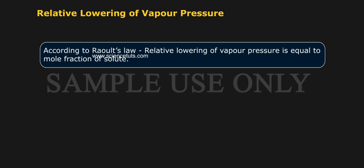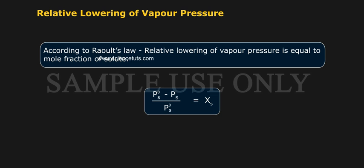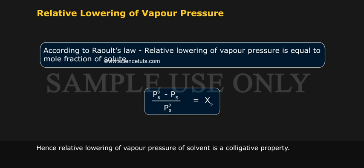According to Raoult's law, relative lowering of vapour pressure is equal to the mole fraction of solute. That is, (PS0 − PS) / PS0 = Xs. Hence, relative lowering of vapour pressure of the solvent is a colligative property.